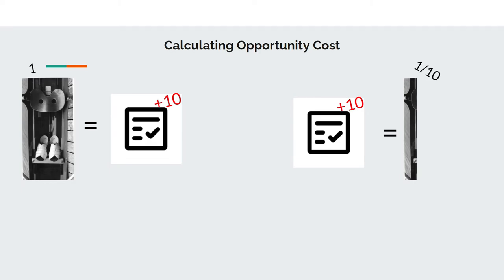Now obviously you can't have one-tenth of a seat in a boat, so maybe he improved on his technique, which could get him closer to kicking out the next person in front of him.